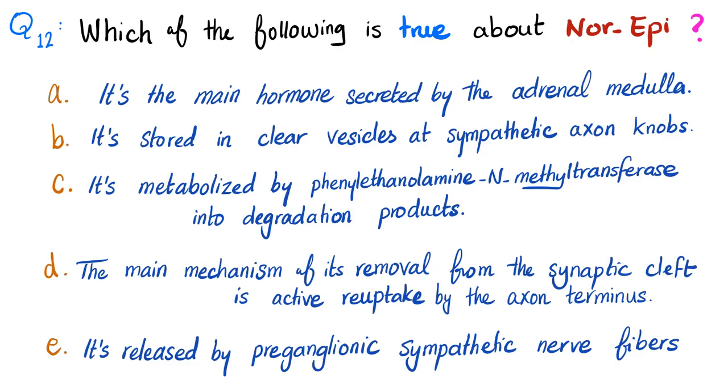Is it A - it's the main hormone secreted by the adrenal medulla? Nope! The main hormone of the adrenal medulla is epinephrine or adrenaline, not norepinephrine. By the way, why do we call it norepinephrine? Because like neither nor, it's neither epinephrine nor epinephrine. It's not epinephrine.